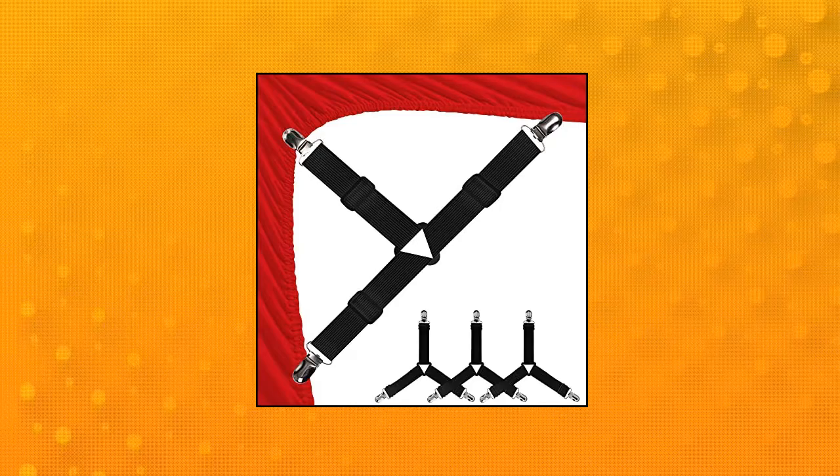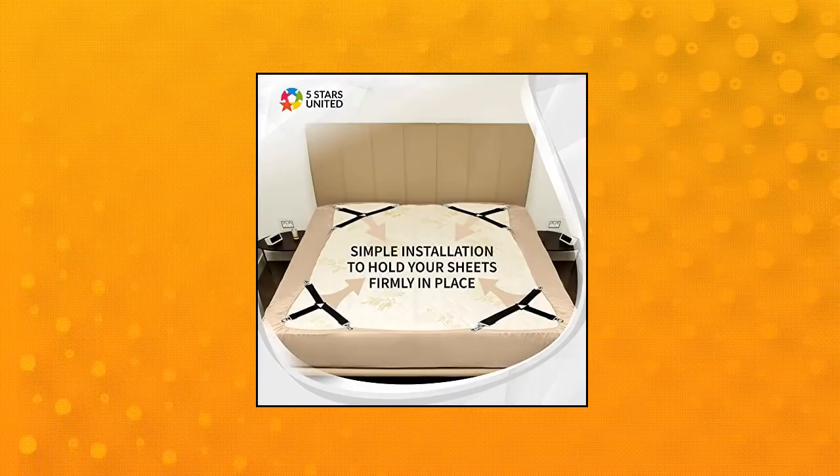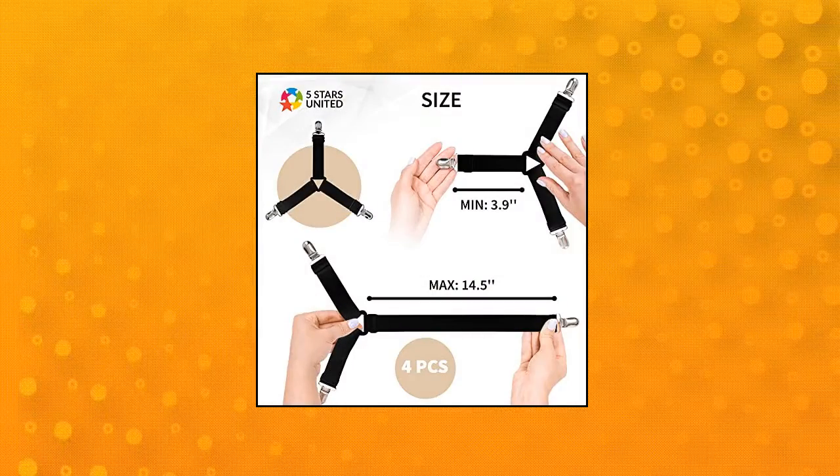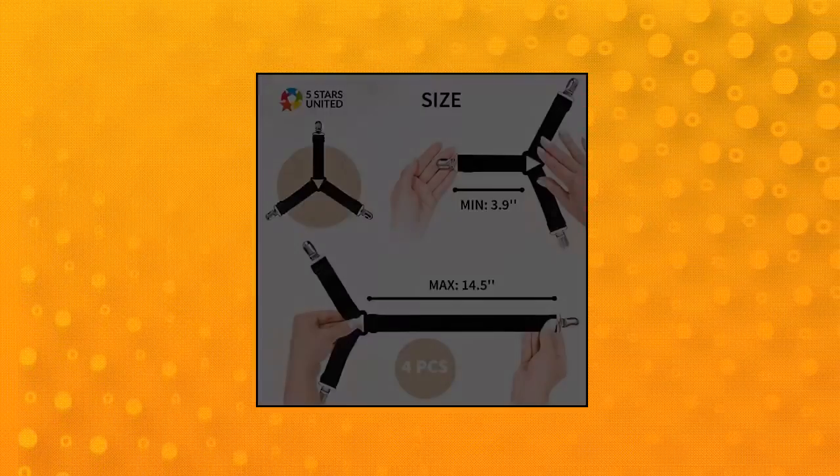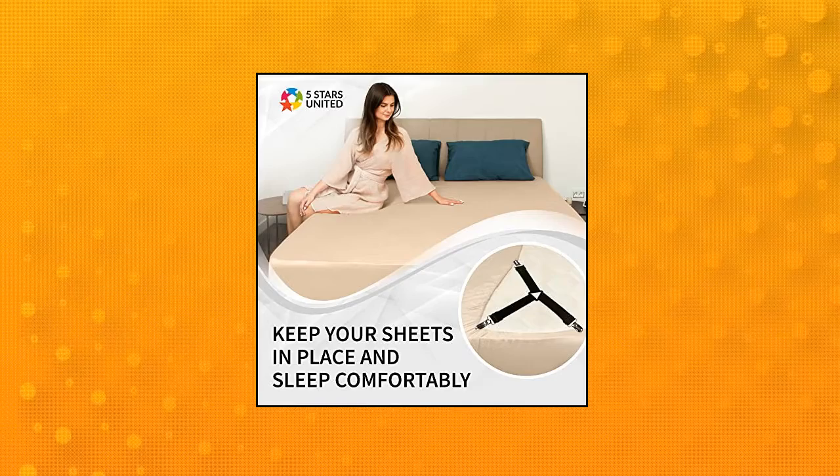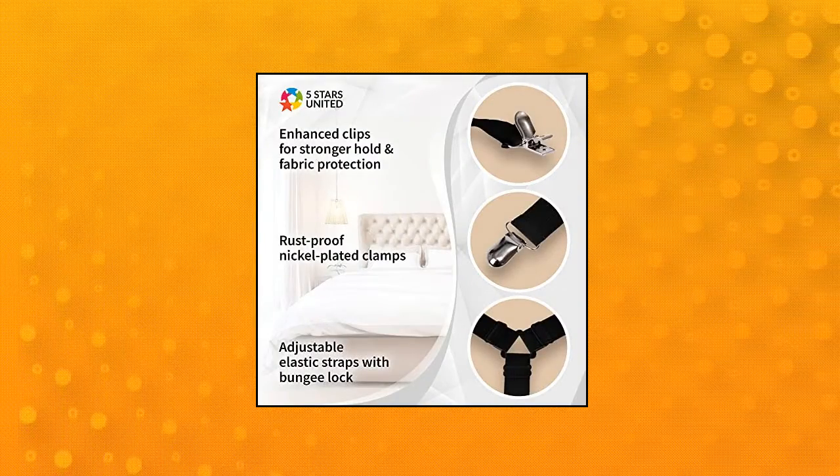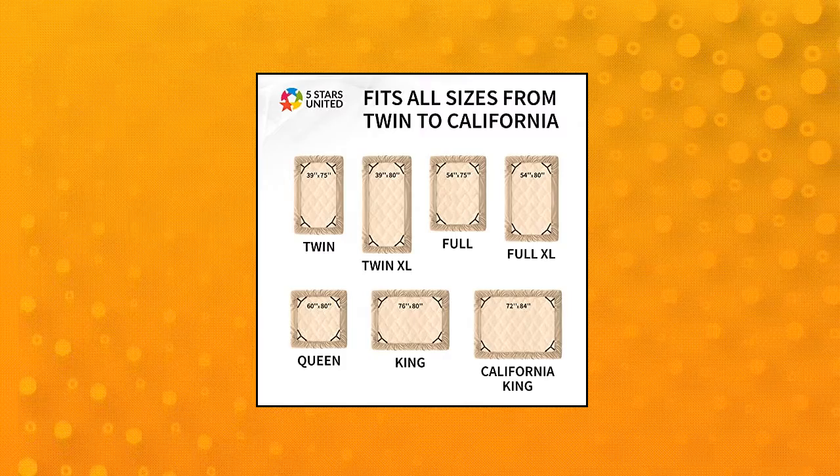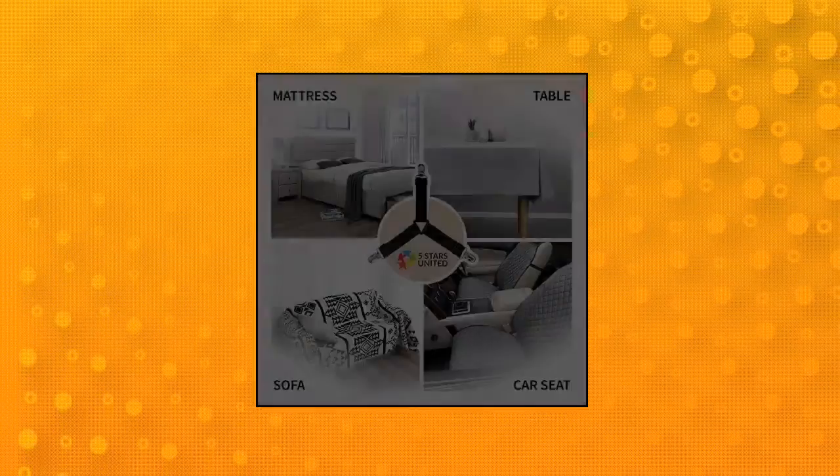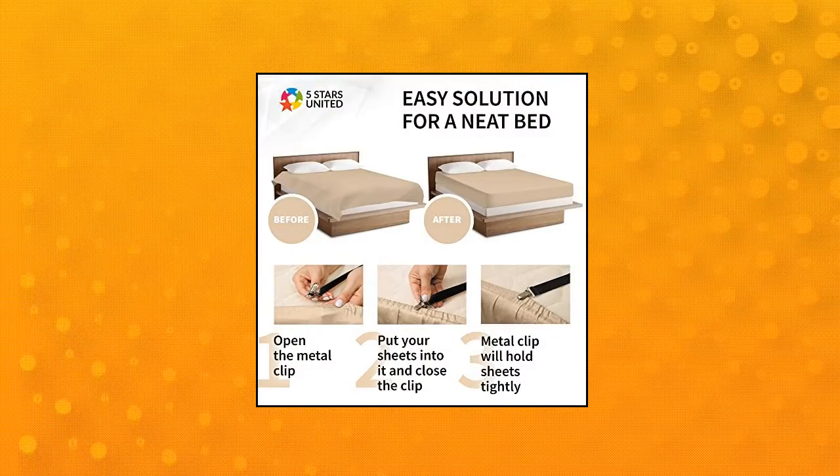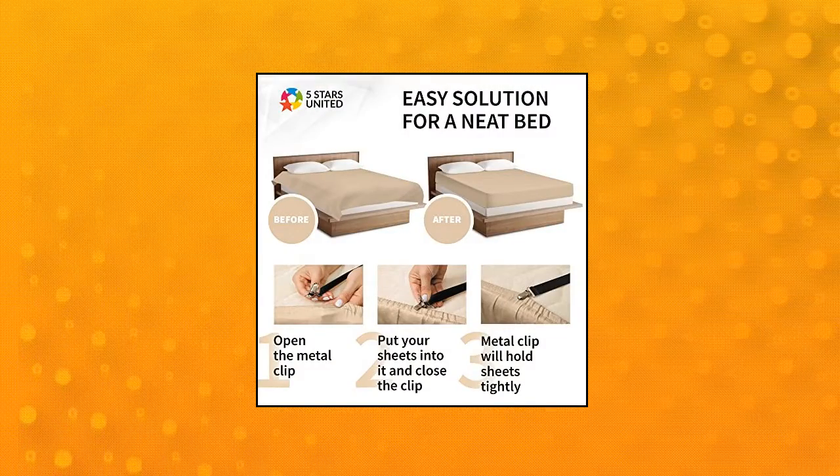5 Stars United Bed Sheet Straps Set 4 Pieces, Premium Bed Sheet Holders. Enjoy a comfortable bed with the 5 Stars United Bed Sheet Holder Straps. The set includes four triangle-shaped belts to securely hold each corner of your sheet in place. Our elastic bed sheet fasteners work for all sheet sizes from twin to California king and ensure perfect tidiness in your bed. They also come in eight colors: black, gray, white, and beige.